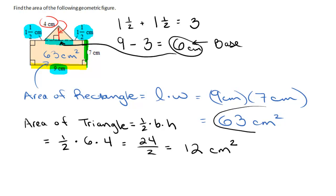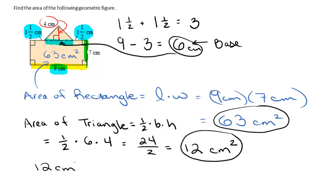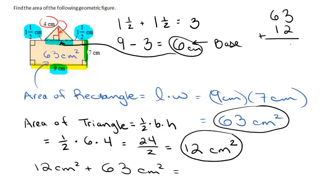Now we take the area of the rectangle and add it to the area of the triangle: 12 centimeters squared plus 63 centimeters squared gives us 75 centimeters squared as the total area of the geometric figure.